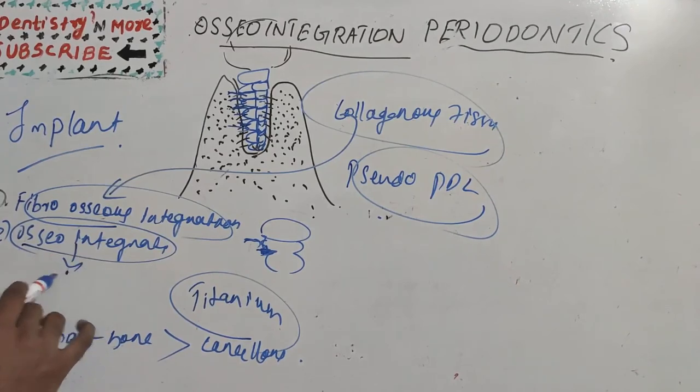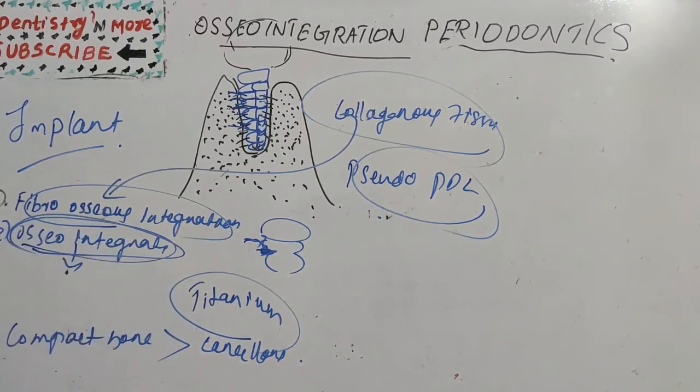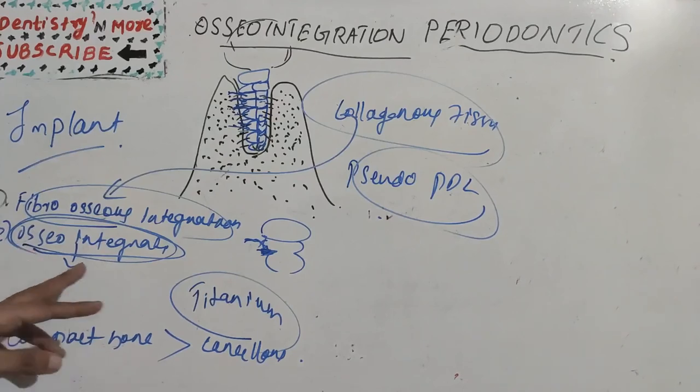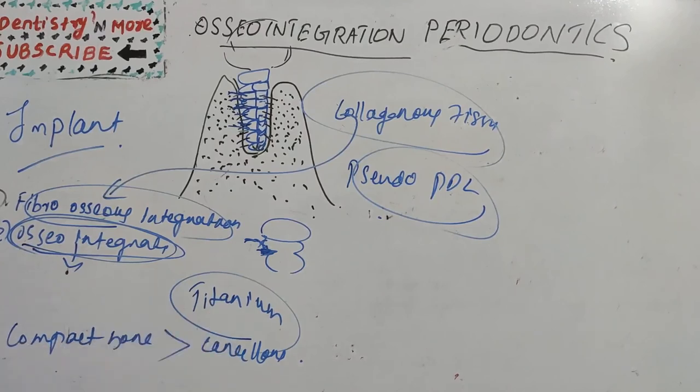What are the factors affecting osseointegration? The biocompatibility of implant, the design of implant, the surface condition of implant, and the amount of stress on implant. Don't forget about titanium and compact bone.